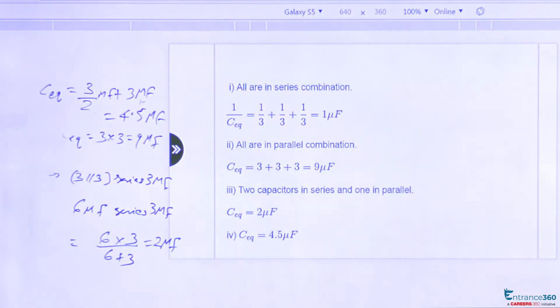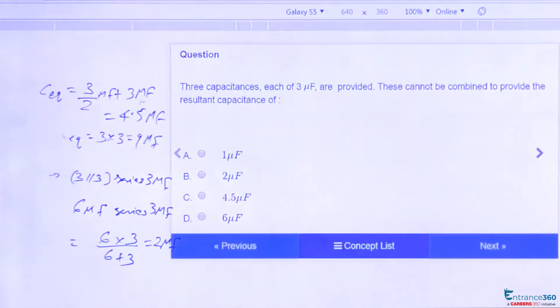We have 1 μF, 9 μF, 2 μF, and 4.5 μF. So 6 μF cannot be obtained as the combination of these three capacitances. So your option is 6 μF.